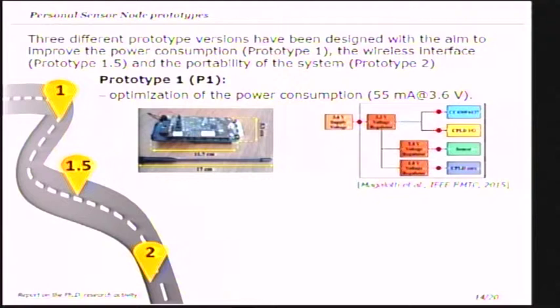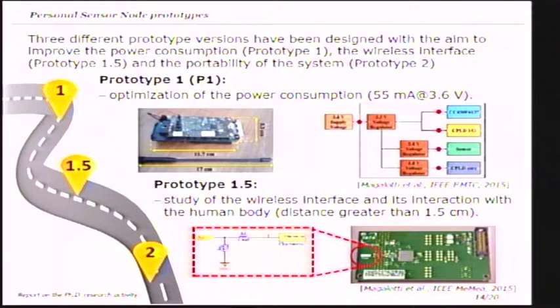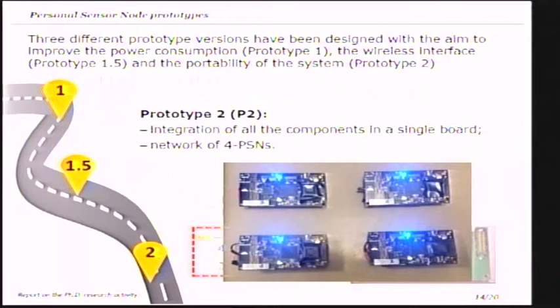I designed three different prototypes with the aim to improve the power consumption and portability of the system. In prototype one we improved power consumption to be compatible with eight continuous hours of operating time. Then I studied how to improve portability — the dipole antenna was replaced by a chip antenna that is very small. I also studied the interaction with the human body, finding that at a distance greater than 1.5 cm the antenna performances are not affected. Finally, the final prototype integrates all components inside a single board: the sensor, the CPLD, the microcontroller, the antenna — and four prototypes were built to create the dosimeter network.